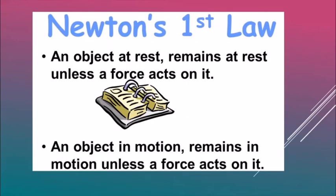Newton gave three laws of motion; in this chapter you only cover the first law. According to Newton's First Law, an object at rest — for example, a coin — will remain at rest unless a force is applied to it. Similarly, an object in motion remains in motion unless a force acts on it. For example, if a car is pushed off a cliff, it keeps moving until a force is applied to stop it.